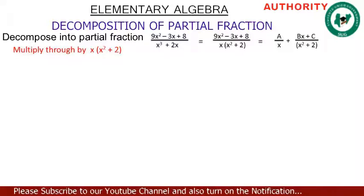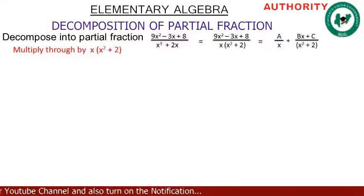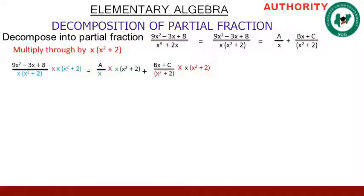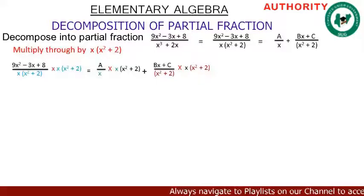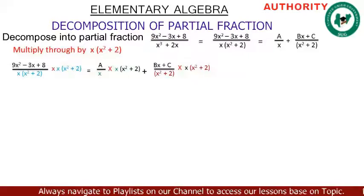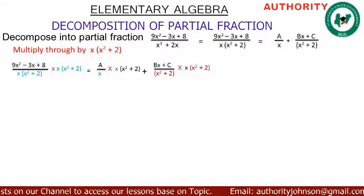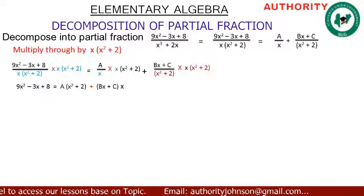We multiply both sides by x(x² + 2). On the left, x(x² + 2) cancels. On the right, for the A term, x cancels leaving A·(x² + 2); for the (Bx + C) term, (x² + 2) cancels leaving (Bx + C)·x.